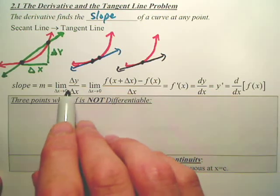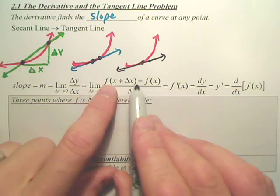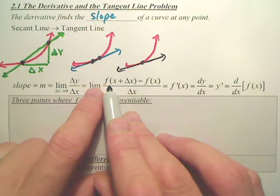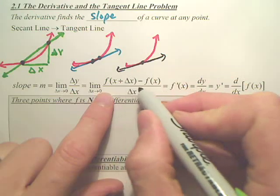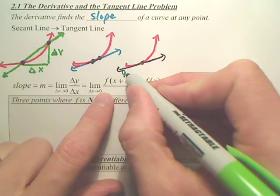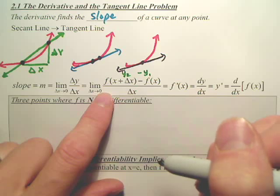Now, we change this to this. Now, do you see how change of x stays at the bottom? Except the top, well, where do they get f(x + Δx) - f(x)? Well, do you understand, for slope, you have y2 minus y1?